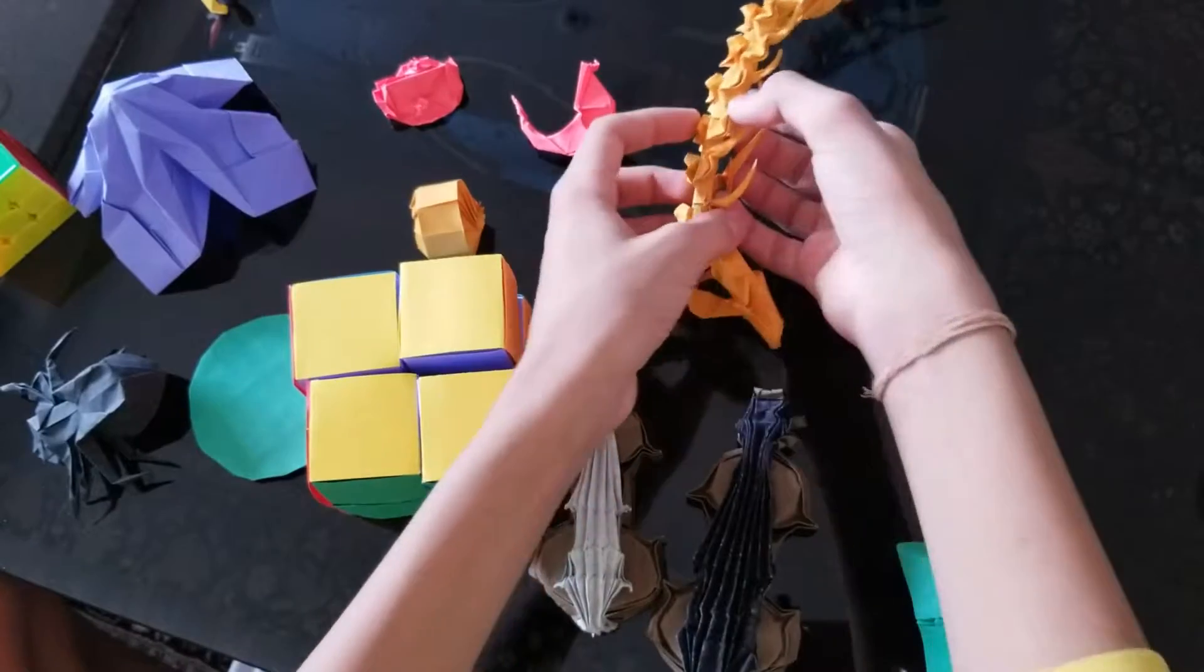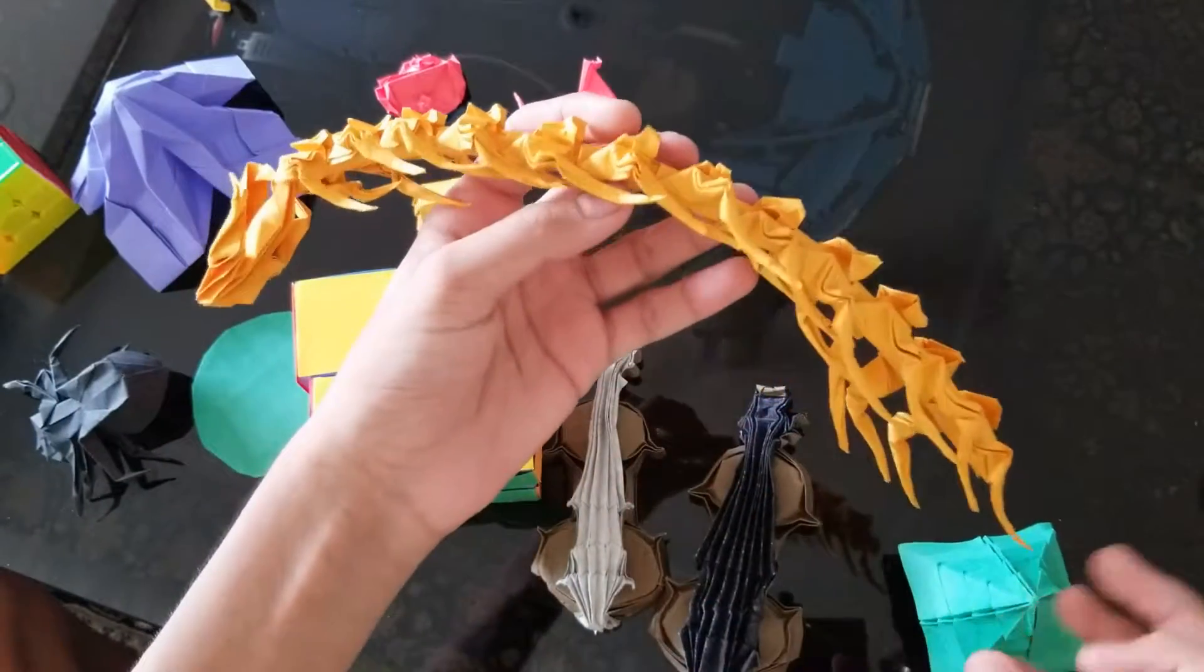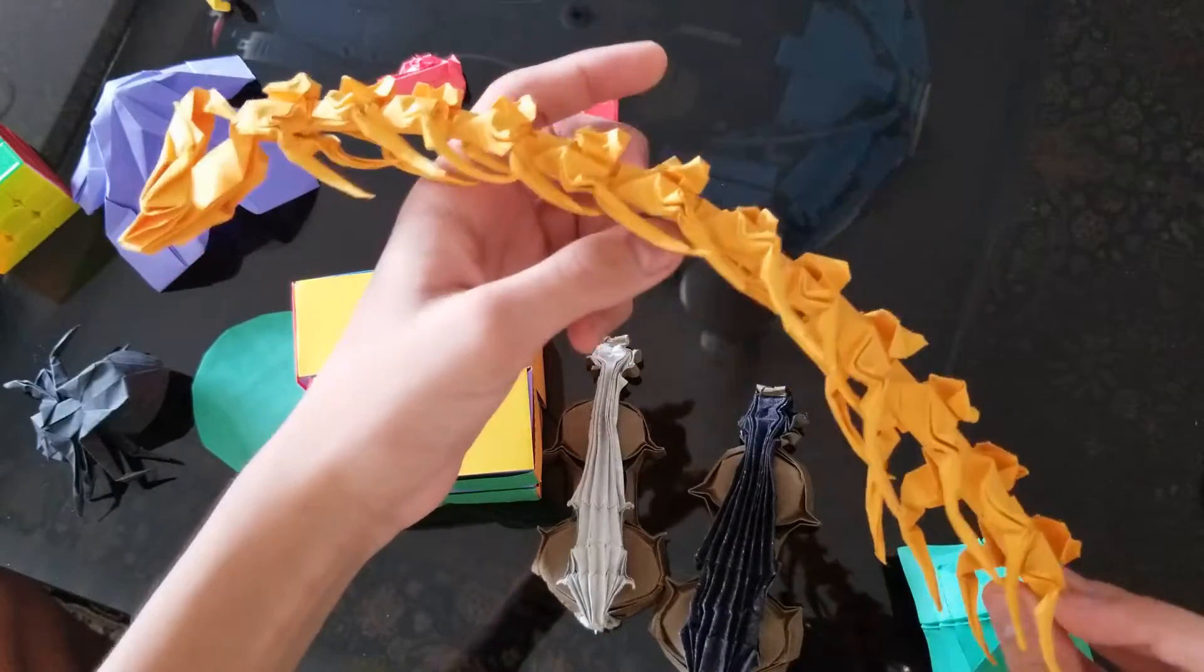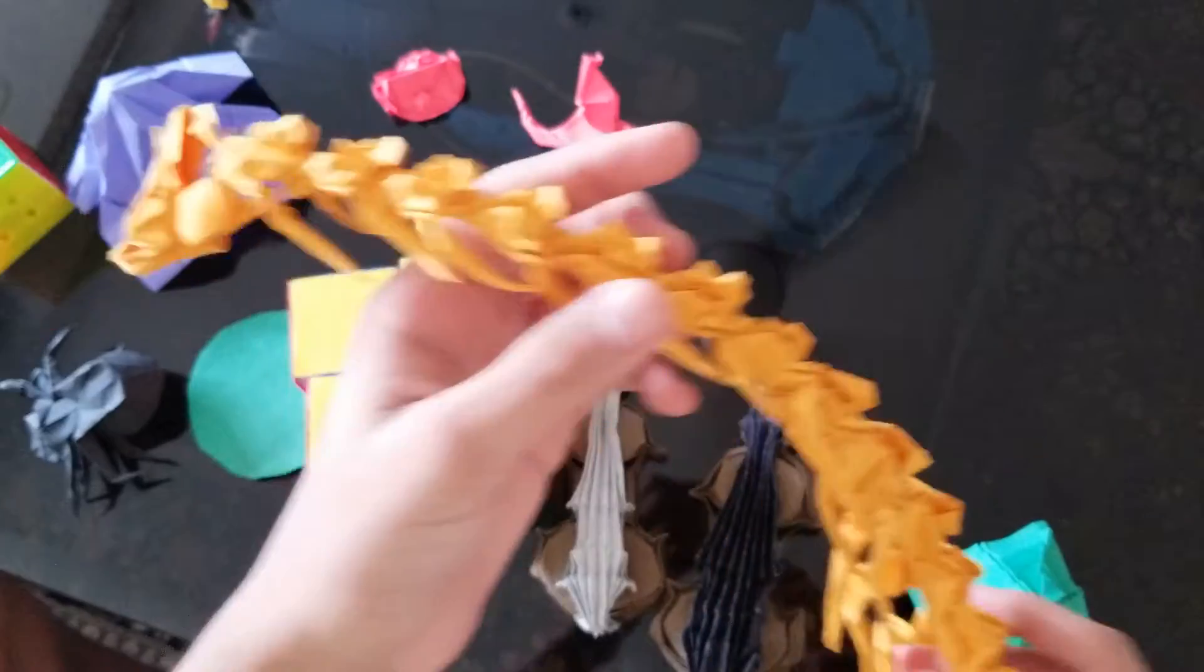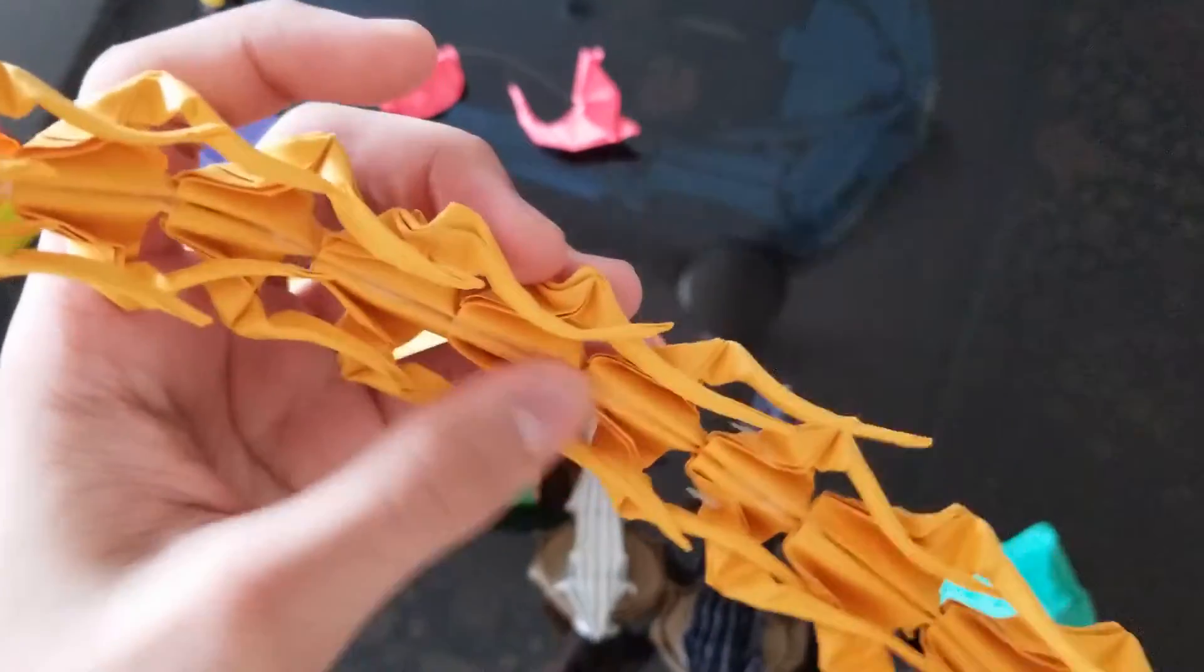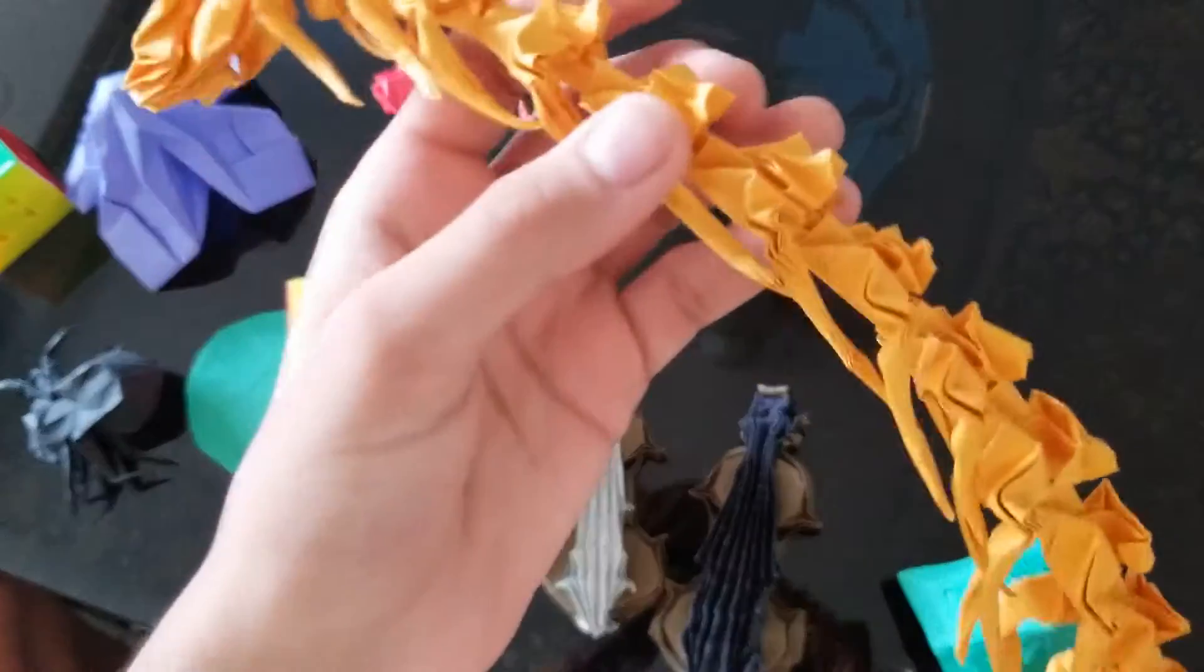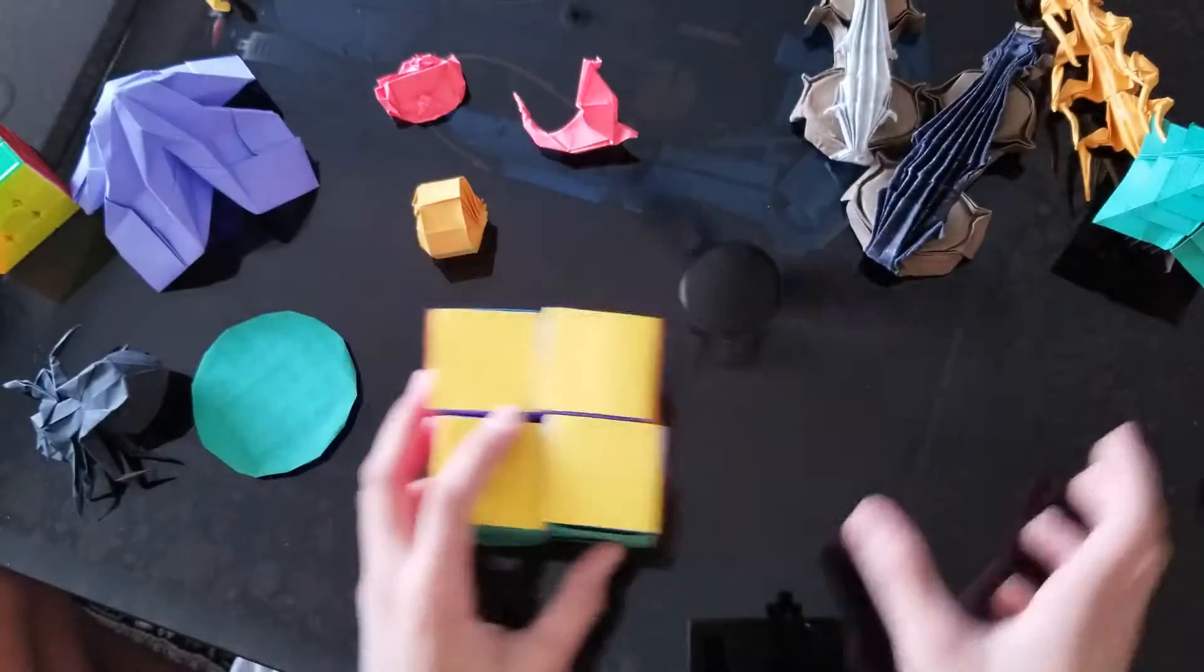Then we come to the origami brachiosaurus skeleton made by Satoshi Kamiya. I am not done with it, it is supposed to be a full dinosaur but I'm left with the neck right now. I mentioned that it is not fully origami, there is glue. That is a spoiler but I mentioned all of those points.